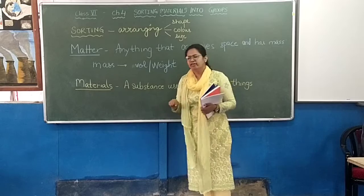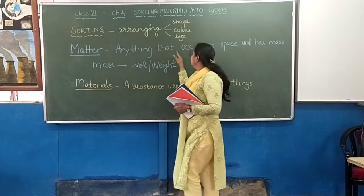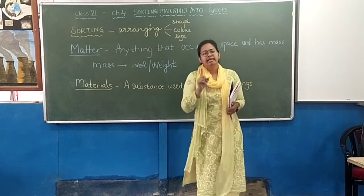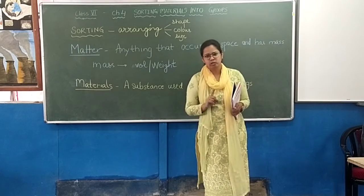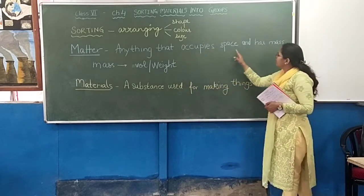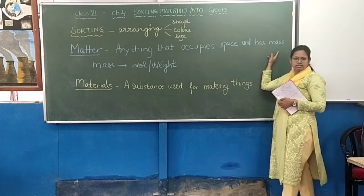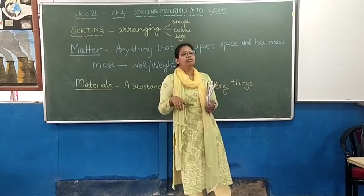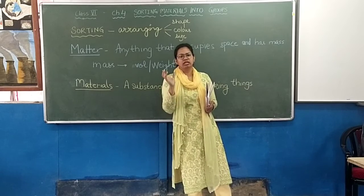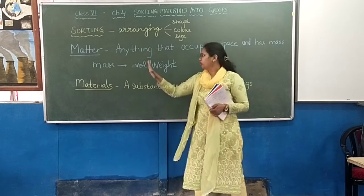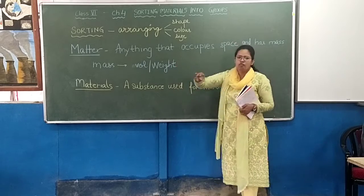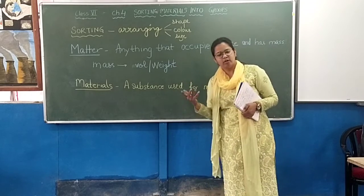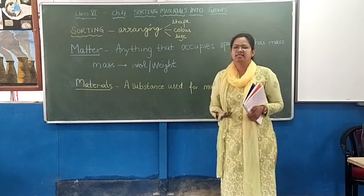So how do we define matter? Matter is anything that occupies space and has mass. This definition is very important, and in future classes you are going to study more in detail about what exactly is matter. For now, we just need to know that matter is something that occupies space and has mass.